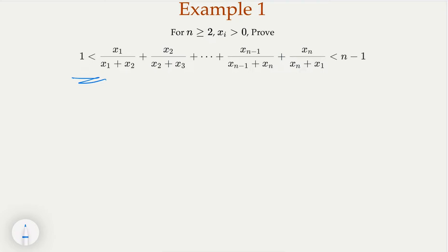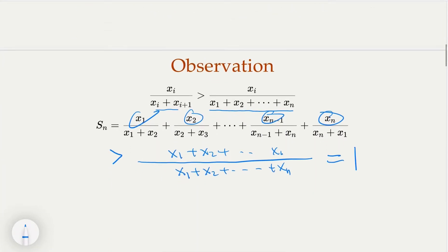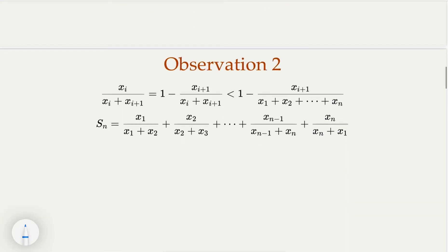If you want to pause the video, try to prove the second part. We're going to use a similar technique. Notice that each term can be rewritten with 1 minus another value, because there are two numbers involved. If I replace the denominator with all the values, I'm making that quantity smaller, but since it's 1 minus that, the whole thing becomes bigger — I am expanding the term. Applying this for each term, I'm expanding the whole thing, so Sn would be smaller.